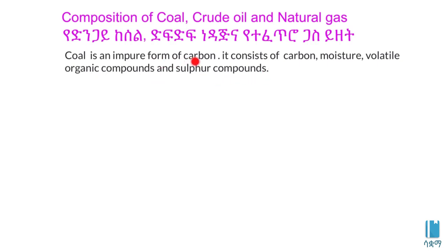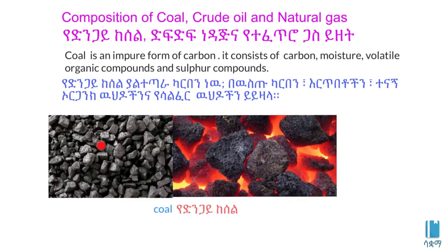Coal is composed of carbon, sulfur. This is the composition of coal. Carbon, volatile organic compounds, and sulfur compounds.